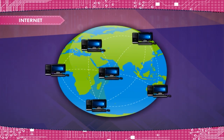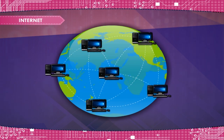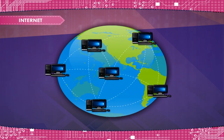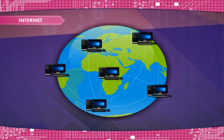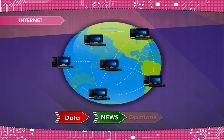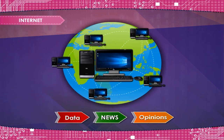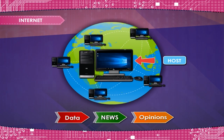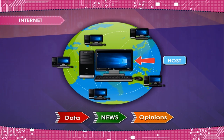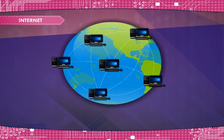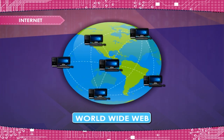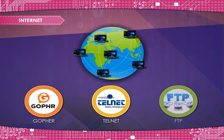Internet — the internet is a network of networks. It is a global network connecting millions of computers all over the world. Hundreds of countries are linked together via computers to exchange data, news, and opinions. Each internet computer is independent and called a host. It uses existing public telephone and communication networks including satellites to relay data between networks using routers. The fastest growing part of the internet is the World Wide Web. Other parts of the internet include services such as Gopher, Telnet, and FTP.